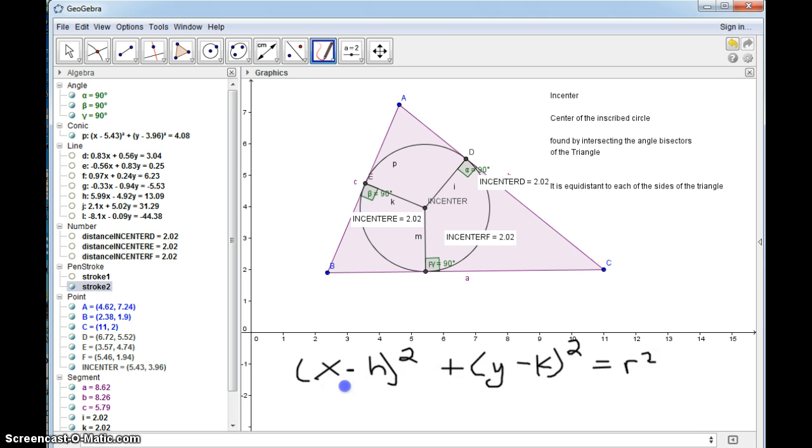If you take the opposite of these, that will give you the center (h,k). So in this case, the center is the opposite of this number, which would be negative 5.43. The opposite would be positive 5.43. And you take the opposite of this negative 3.96, which will be positive 3.96.